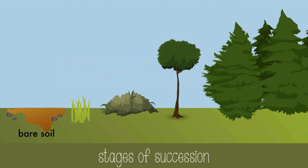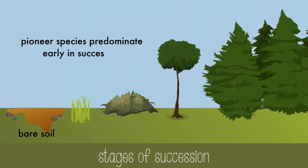Let's look at the stages of succession and how to replace or start a community. First, you have pioneer species, which are organisms that predominate early in succession. These species are usually small and grow and reproduce quickly, like moss, lichen, algae, or grasses.